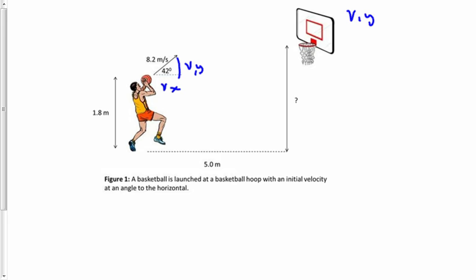V1 in the y equals 8.2 sine of 42. V1 in the y equals 5.5 meters per second.